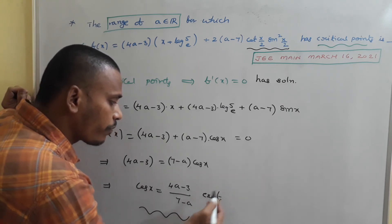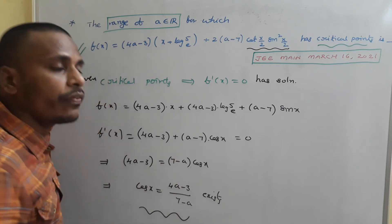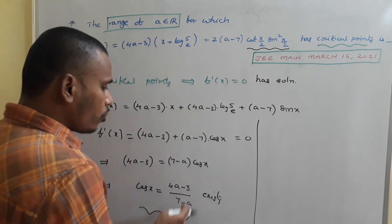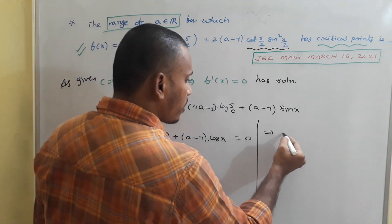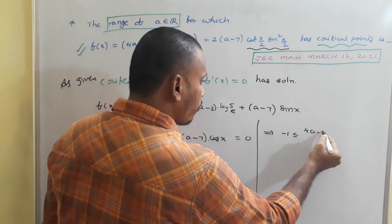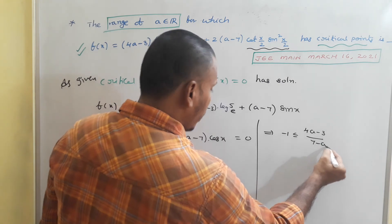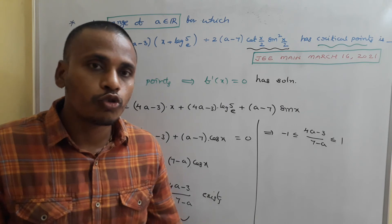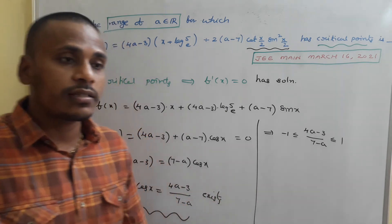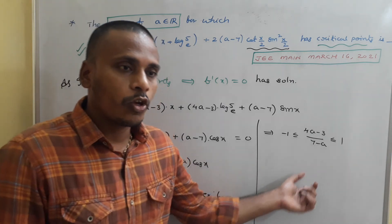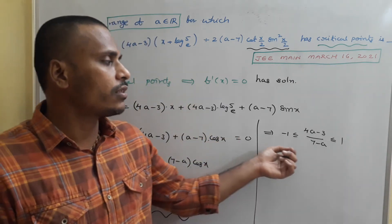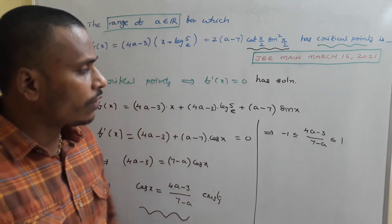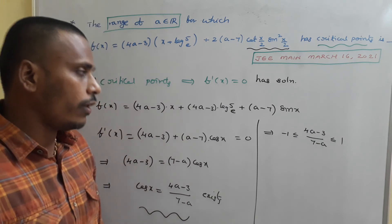Since cos x ∈ [-1, 1], for cos x = (4a - 3)/(7 - a) to have a solution, we need -1 ≤ (4a - 3)/(7 - a) ≤ 1. We solve this double inequality to find the valid range of a.